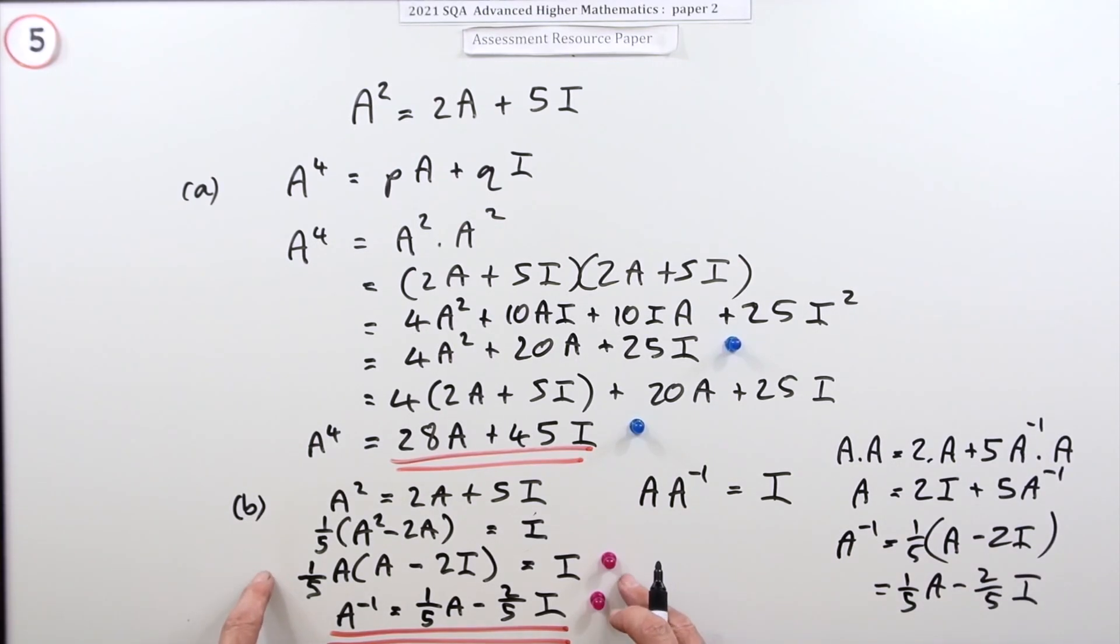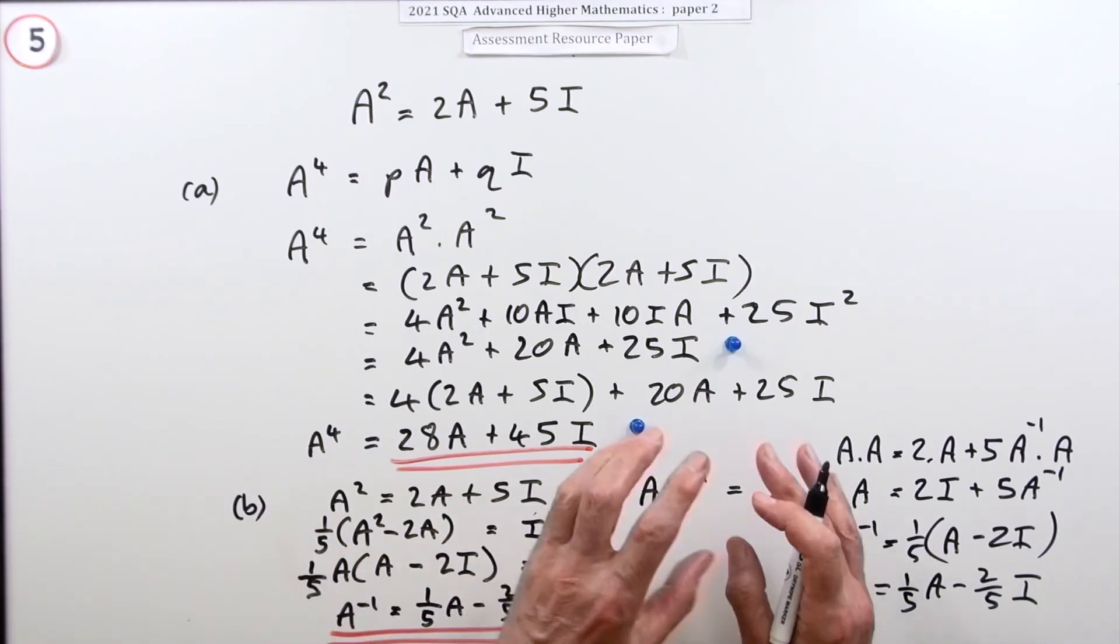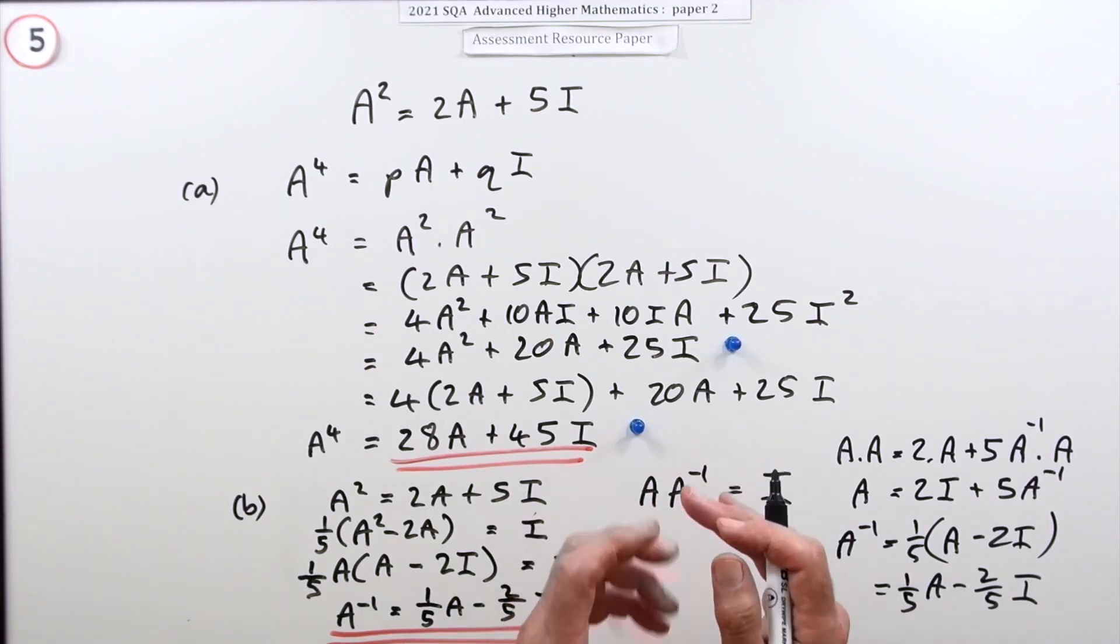But that'd be the more usual way to do this type of question: just rearrange it into the form of A times something equals I, and then that something, whatever happens to be, is the inverse.